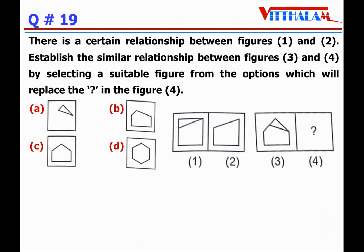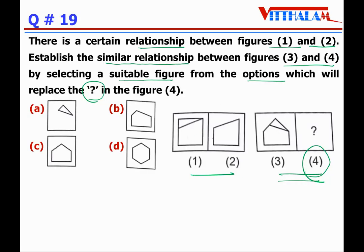Question 19: There is a certain relationship between figure 1 and figure 2. Establish a similar relationship between figure 3 and figure 4 by selecting a suitable figure to replace the question mark. The relationship is that a part has been removed from figure 1 to get figure 2. Applying the same logic to figure 3, removing that part gives a figure which equals option B.